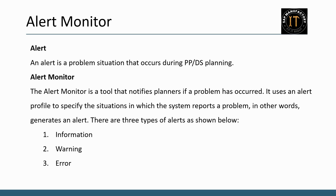Before we start with alert monitor, let's talk about the alert. An alert is nothing but a problem situation that occurs during planning or scheduling. This alert can be one of three different types: information, warning, or error. As per the standard SAP definition, you can set the threshold value to categorize what is called an information message, a warning message, or an error message.